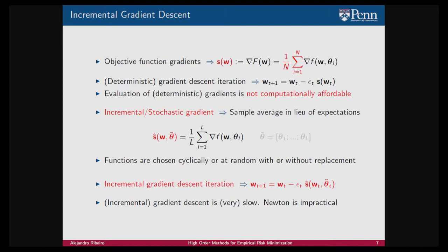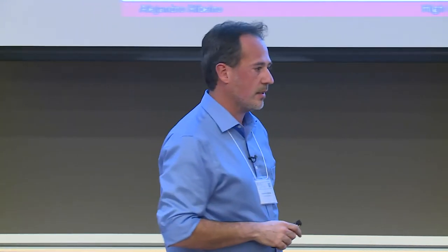This algorithm will converge because the expected value of the stochastic gradient equals the full gradient, so on average you move in the right direction. The problem is that it is very slow. To address that slowness you would like to use Newton, but Newton is impractical here. So instead we resort to a stochastic BFGS or stochastic quasi-Newton method.